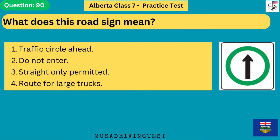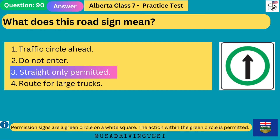What does this road sign mean? 1. Traffic circle ahead. 2. Do not enter. 3. Straight only permitted. 4. Route for large trucks. The answer is 3: straight only permitted. Permission signs are a green circle on a white square — the action within the green circle is permitted.